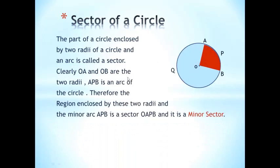Clearly, OA and OB are the two radii. APB is an arc of the circle. Therefore, the region enclosed by these two radii and the minor arc APB, as we have discussed, minor arc APB is sector OAPB. This one is the sector and this is the minor sector. So keep this thing in mind — this is the minor sector.